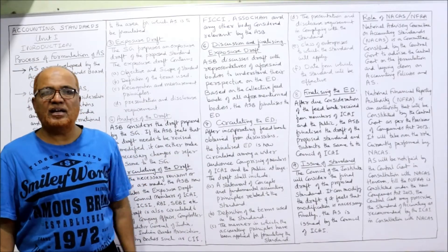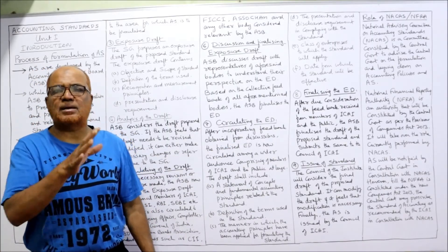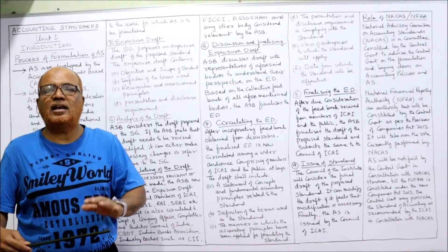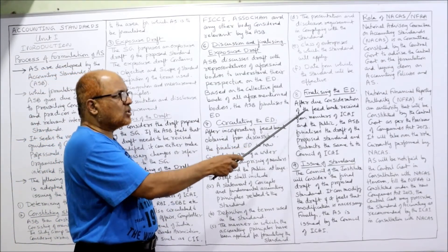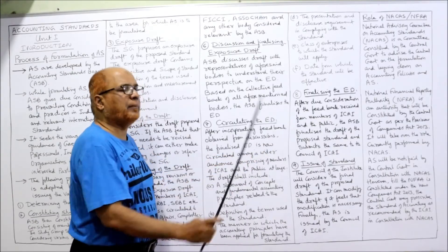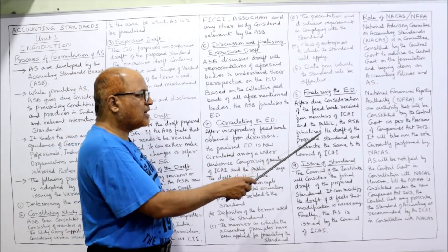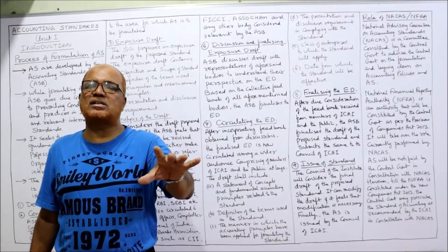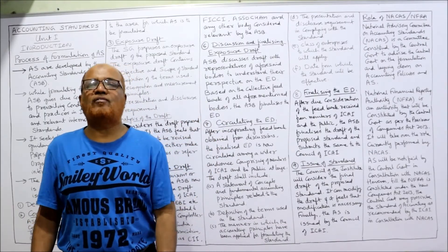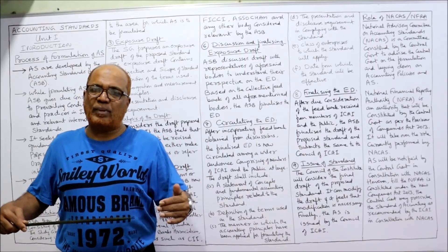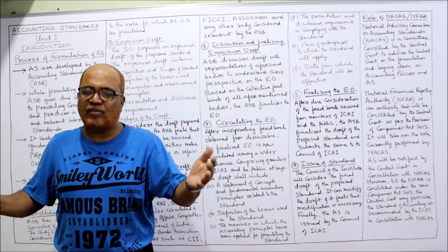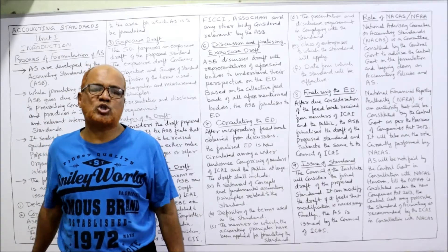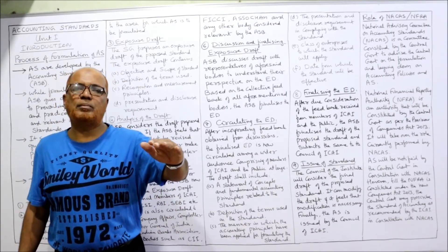The eighth step is finalizing the ED. After getting feedback from the public, the final exposure draft is prepared. After due consideration of feedback received from members of ICAI and the public, the ASB finalizes the draft of the proposed standard and submits it to the Council of ICAI. The final authority for issuing the accounting standard rests with the Council of ICAI.